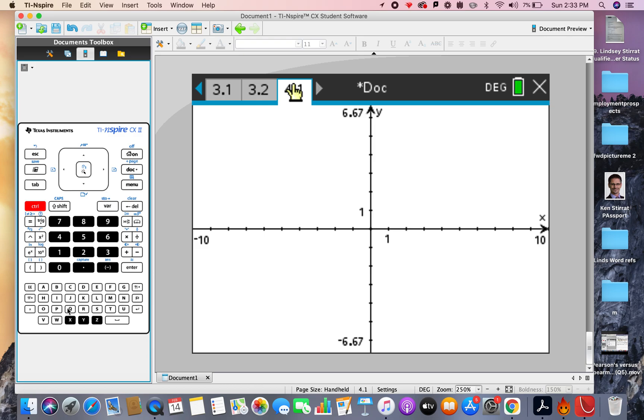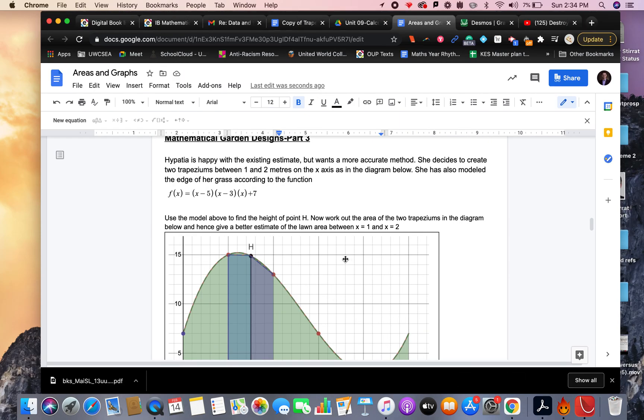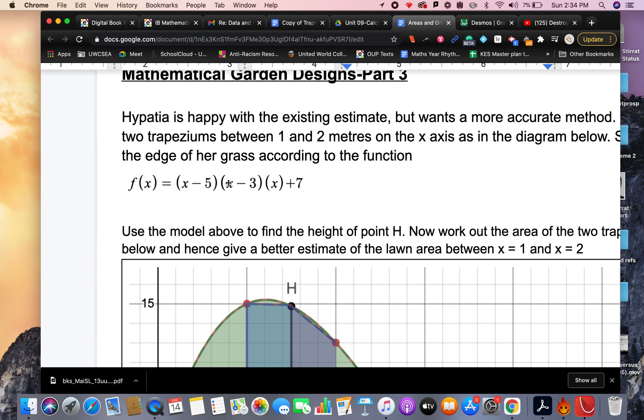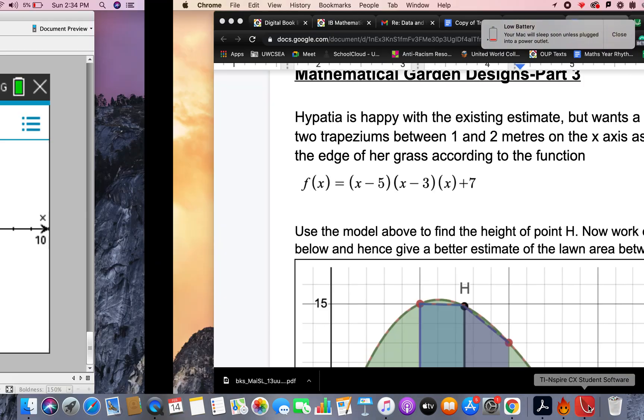Here, ctrl G, I can't see G, there it is, and we're going to type in the function that we dealt with here, with Hypatia's Garden, so x minus 5, x minus 3, x plus 7, so let's try that.